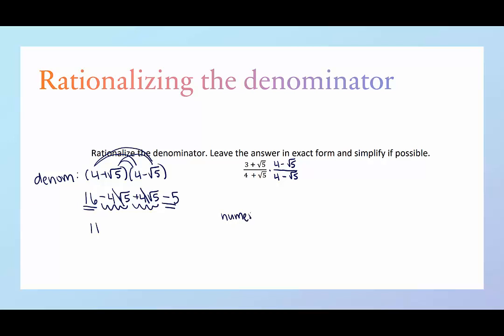For the numerator, we're also going to distribute, but we probably aren't going to be able to cancel out the middle terms the way we could for the denominator, and that's okay. It's okay to have radicals in the numerator.